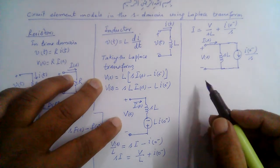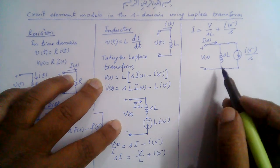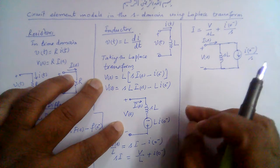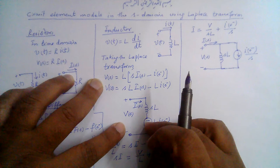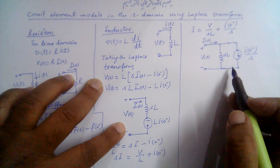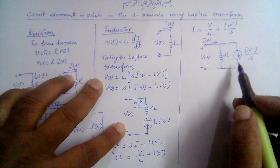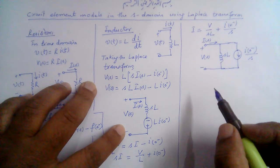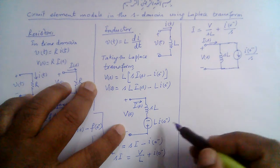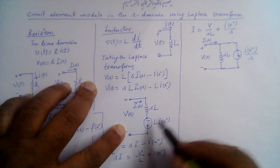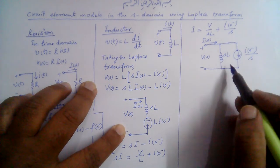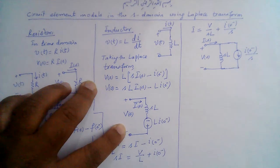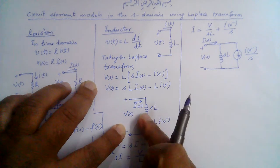When transforming a circuit from the time domain to the S domain using Laplace transform, we can use either the series voltage source model or the parallel current source model depending on convenience. For example, if using node analysis the parallel model may be more convenient. Both are equivalent. If the initial condition I(0⁻) is zero, the source term disappears and the inductor reduces to simply an impedance sL.